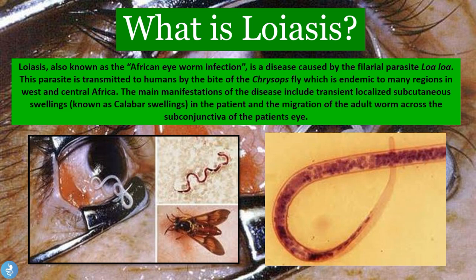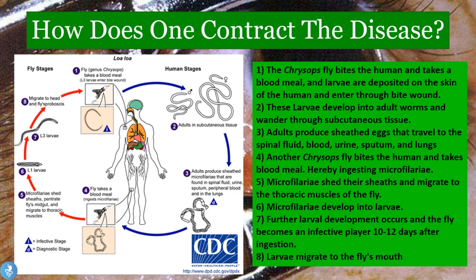Now let's take a closer look at how one can contract this disease. Humans contract it through the Chrysops fly bite. First, the Chrysops fly bites the human and takes a blood meal, and larvae are deposited into the skin of the human and enter through the bite wound. These larvae then develop into adult worms and wander through the subcutaneous tissue.